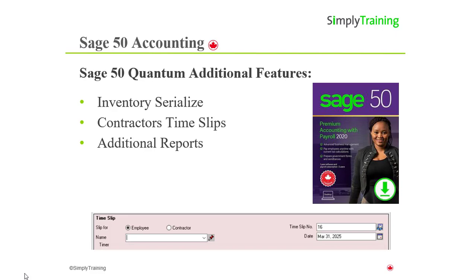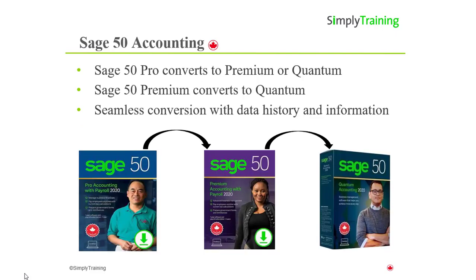The next level is Sage 50 Quantum, which has all the features of Pro and Premium. Quantum offers serialized inventory for items that need to be tracked. In addition to time slips, you can track contractors' hours and the costs pulled directly into projects and departments. Quantum also has additional reporting available in the report center. A big benefit in using the Sage 50 family is that it grows with your business. When the business requires additional features, it is a seamless conversion to move up to the next level. Sage 50 Pro can be converted to Premium or to Quantum, and Premium converts to Quantum. Converting Sage 50 programs is seamless and keeps all the history, data, and financial information intact.